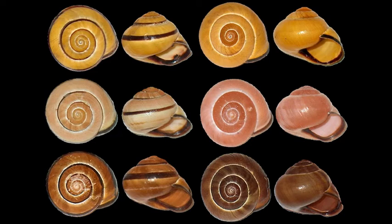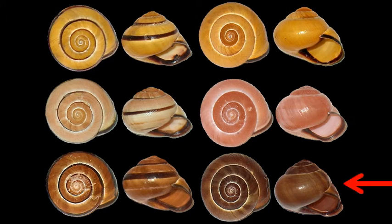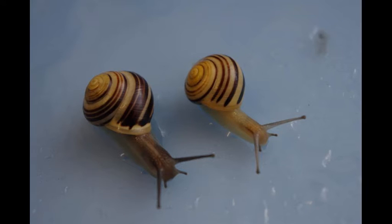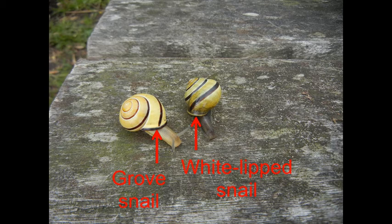From the collected grovesnails, the phenotype was determined and divided into six categories: yellow unbanded, pink unbanded, brown unbanded, yellow banded, pink banded, and brown banded. Juvenile snails were not taken into account, because they haven't fully developed their color and banding. An adult grovesnail has a black or brown lip, whereas juveniles and a closely related species have a white lip.